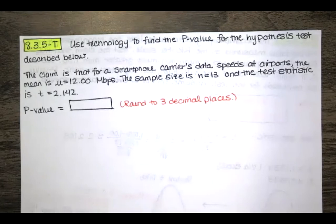They're asking us to just enter the p-value and they want us to round to three decimal places.